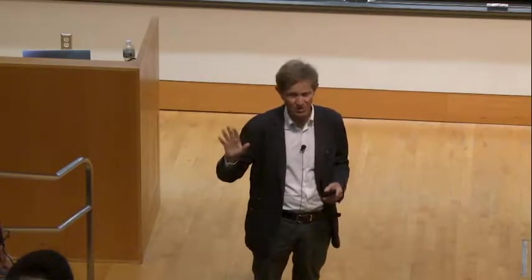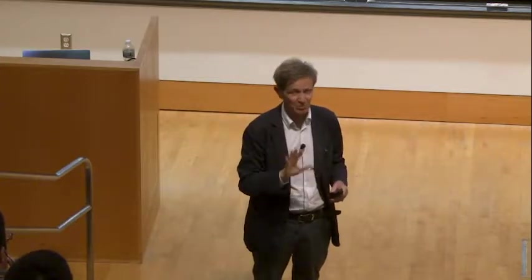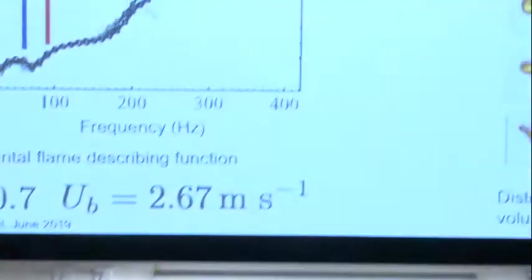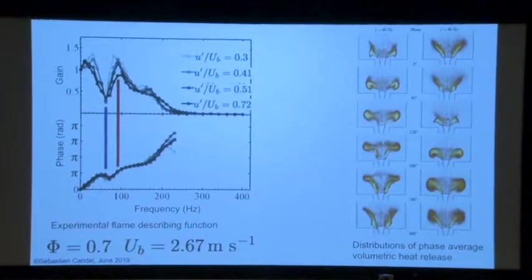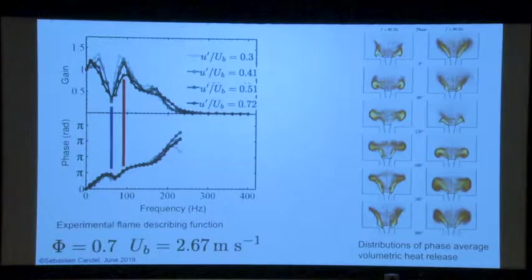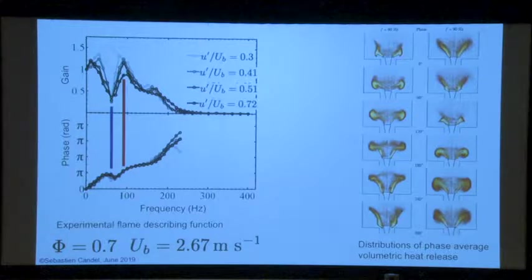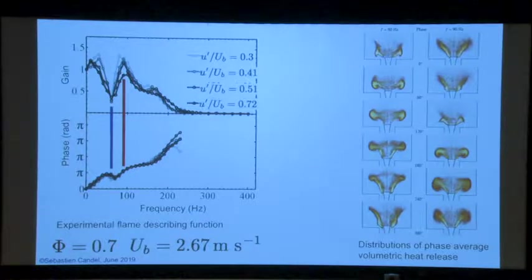The swirl number is really very important. If it's too high, it's not so good. If it's too low, it's not so good. There is a region where the swirl number allows you to stabilize the flame properly at a certain distance from the injector. When you measure the transfer function or the describing function, the gain has a trough — there is a region with a very low level — and here again the gain is higher. That was found in our experiments.